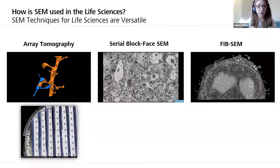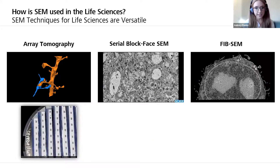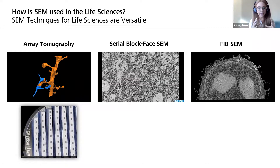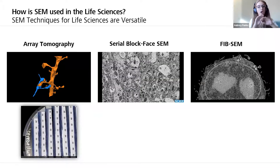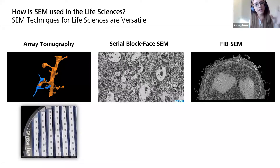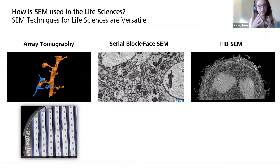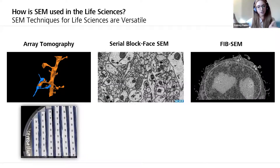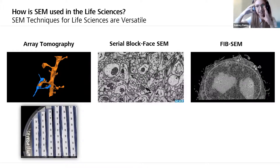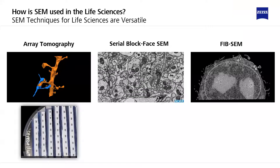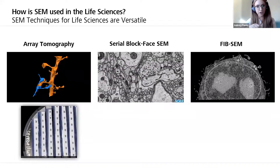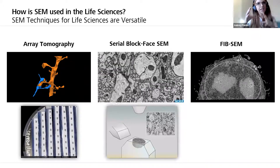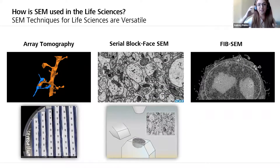Another volume SEM technique is serial block face SEM, or SBF-SEM. This is direct imaging of a sample block that's been resin embedded in some type of epoxy or plastic. The SEM has an in-situ ultra-microtome that takes really thin slices of that sample, then the scanning electron beam scans the surface and gives us an image. We cut away the top, scan the surface, and get an image, doing that over and over to create volume data — saving the time it takes to use the ultra-microtome and collect all those sections separately.